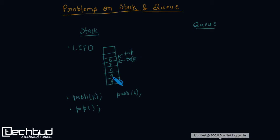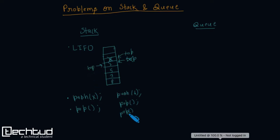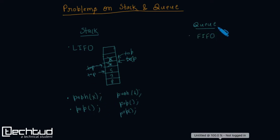If we want to delete 6, we simply call pop. Pop deletes the topmost element — here that is 6 — so 6 gets deleted and the top pointer moves down. If we call pop one more time, 2 will be deleted and top will point to the next element. So stack follows last in first out with operations push and pop.